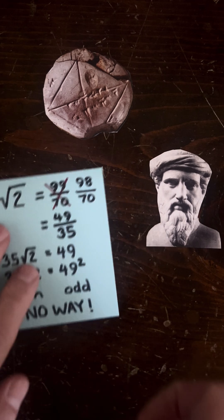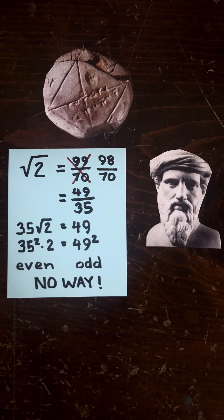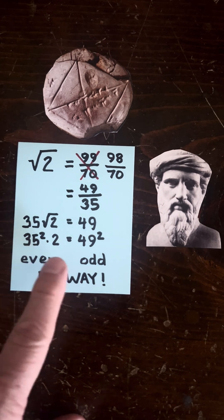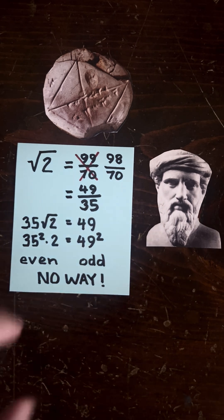And the Babylonians could say, oh, I didn't mean 99 over 70. I mean 98 over 70, but that just reduces to 49 over 35. And you can do the same thing in that this is an even number and that's an odd number. So no way.